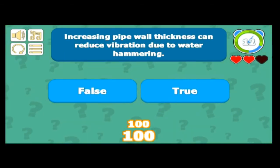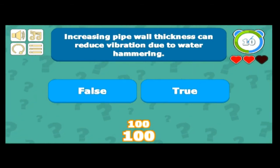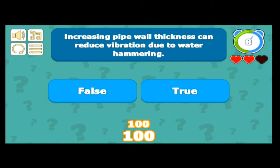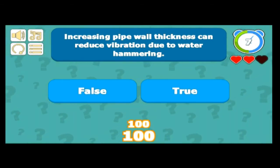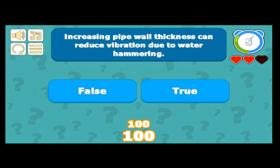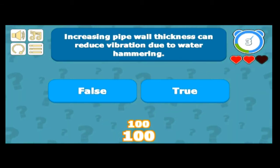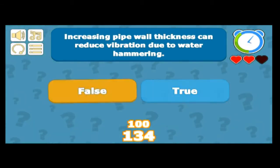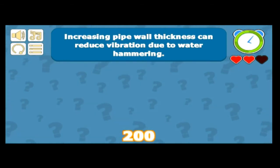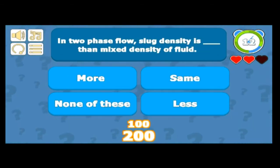Increasing pipe wall thickness can reduce vibration due to water hammering — well, increasing wall resistance does strengthen the piping, but it doesn't reduce the wall stress itself. So the answer is false.